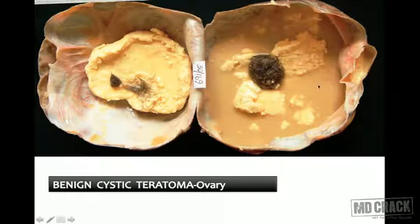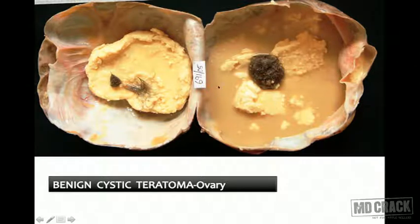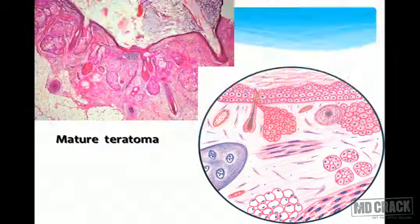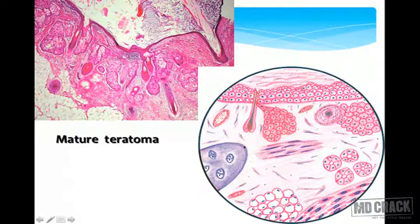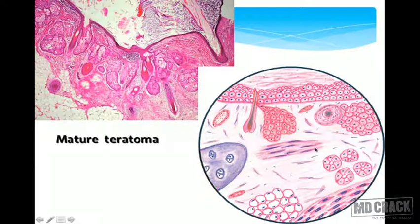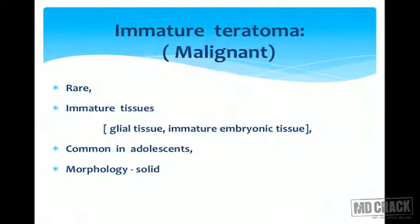Grossly, the cut section of a benign cystic teratoma shows a bolus of hair and sebaceous material with dirty fluid. Any solid area must be extensively sampled to detect malignant transformation. Microscopically, the most common finding is skin with adnexal structures — hair follicles, sebaceous glands, sweat glands — along with cartilage, neural elements, adipose tissue, and smooth muscle bundles. Any tissue type can be seen in teratomas.